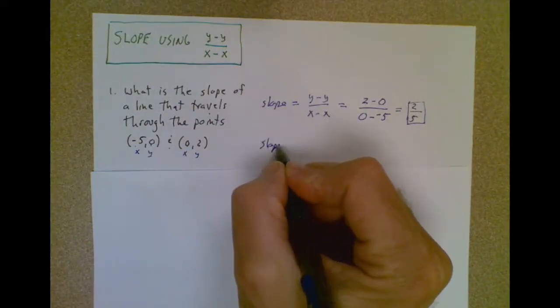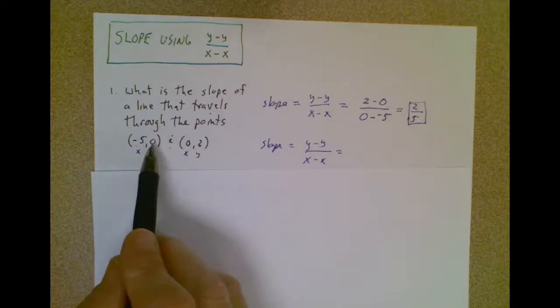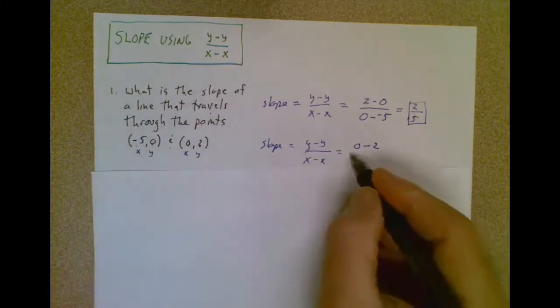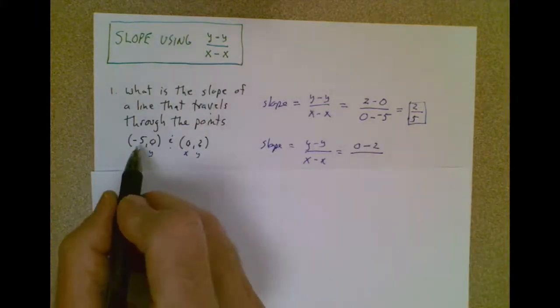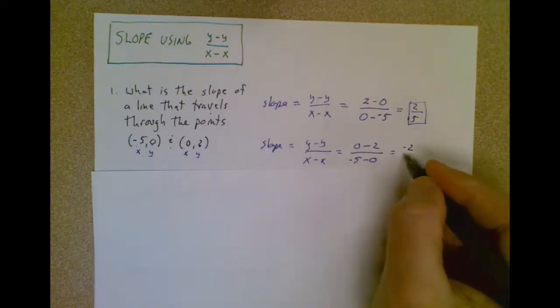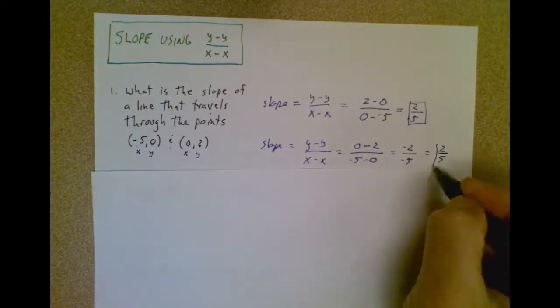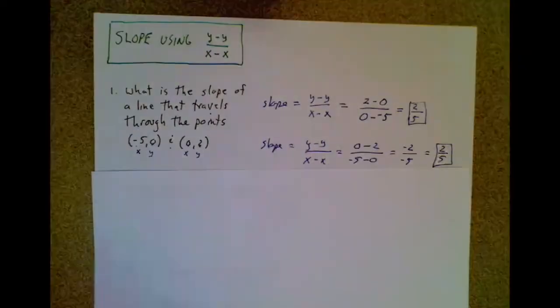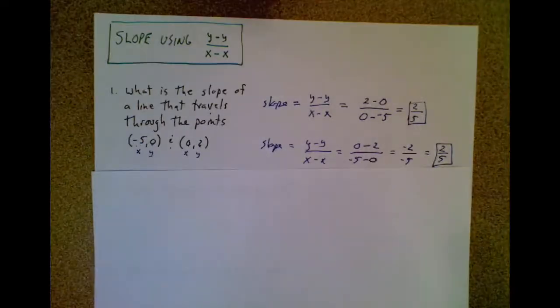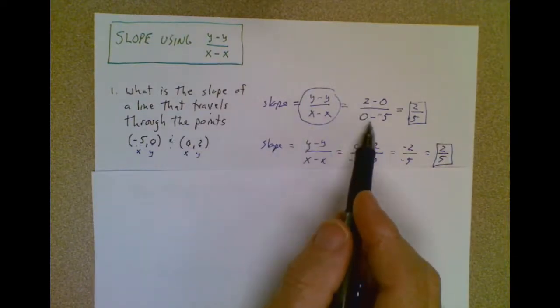Now, by the way, if somebody chose to do the other order, they're still going to get the same answer as me. In the first example, I went 2 minus 0 for my y minus y. But what if I went 0 minus 2, y minus y? For my x minus x, I have to follow that order, and it's negative 5 minus 0. If I do this, 0 minus 2 is negative 2, negative 5 minus 0 is negative 5, and a negative divided by a negative is a positive, so I get the exact same answer.